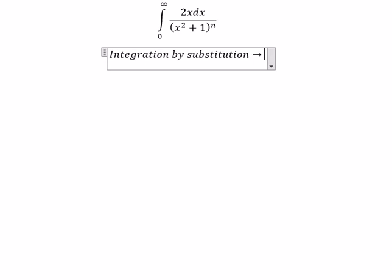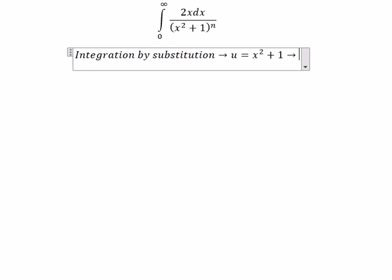We need to use integration by substitution. So we have u equals x squared plus 1, and du equals 2x dx.